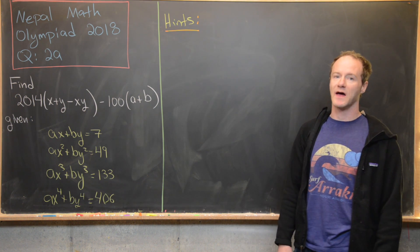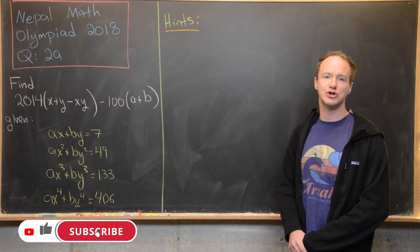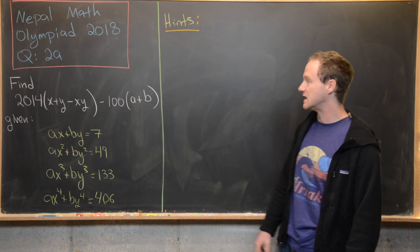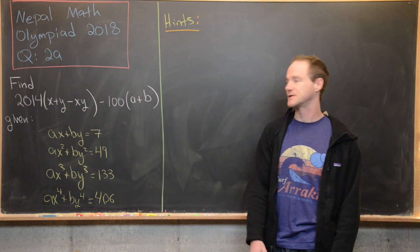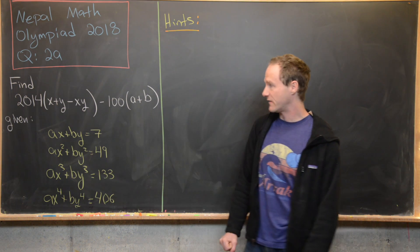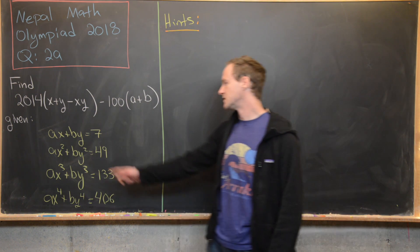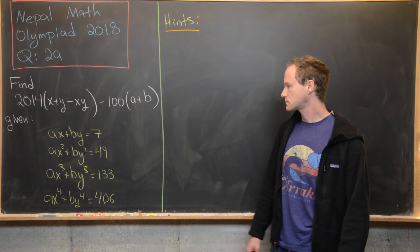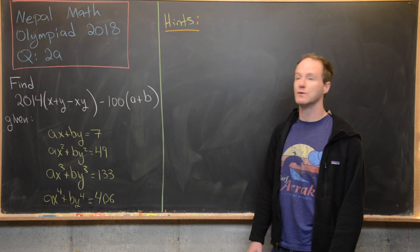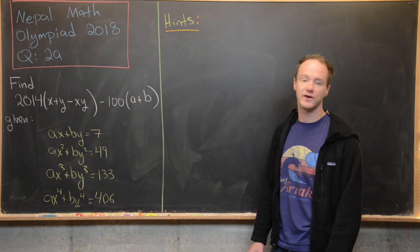Here we're going to look at a nice problem from the Nepal Math Olympiad, from the year 2018, question 2a. Our goal is to find the value of 2014 times (x + y - xy) minus 100 times (a + b), given that x, y, a, and b satisfy a system of nonlinear equations: ax + by = 7, ax² + by² = 49, ax³ + by³ = 133, and ax⁴ + by⁴ = 406.